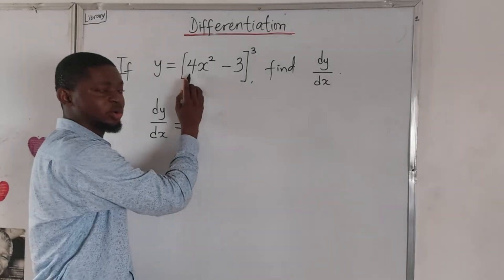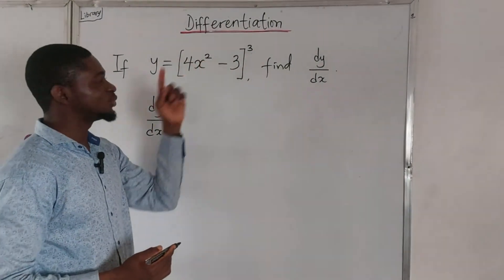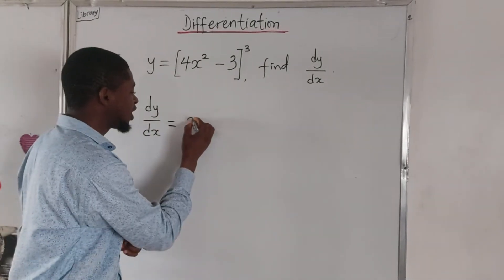So it becomes 3 multiplied by 2, that's 6, multiplied by 4, and that is 24. You have 24x.